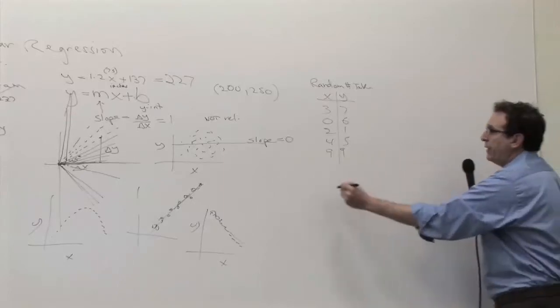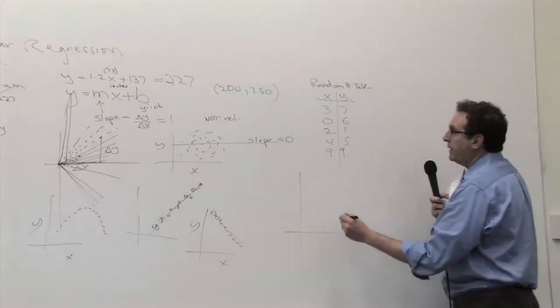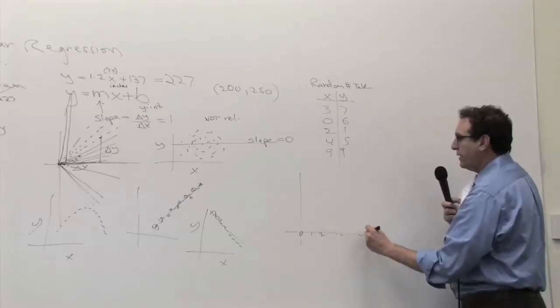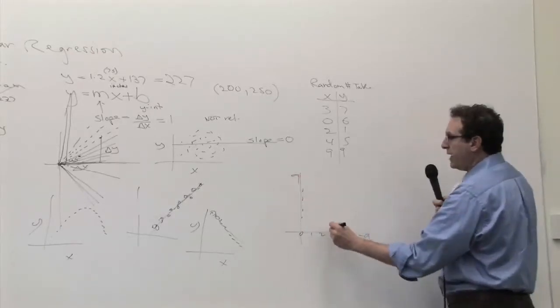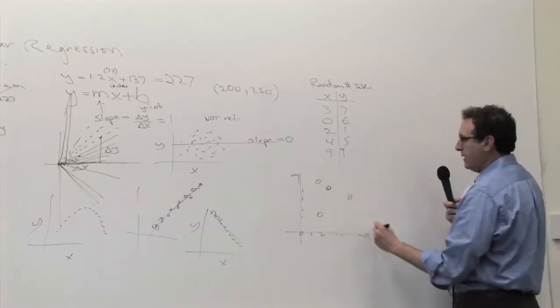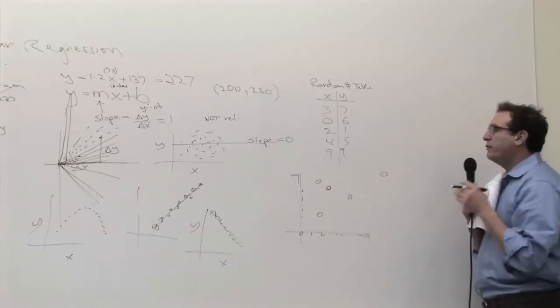OK, make a scattergram. So step number two is basically, you can make 1, 0, 0 is here. 1, 2, 3, 4, 5, 6, 7, 8, 9. 1, 2, 3, 4, 5, to 9. So 3 on the X. The first dot is here. Another dot is here. Another dot is here. Another dot is here. One dot is here. OK, so you have your five dots.